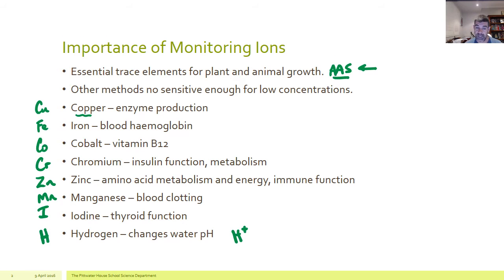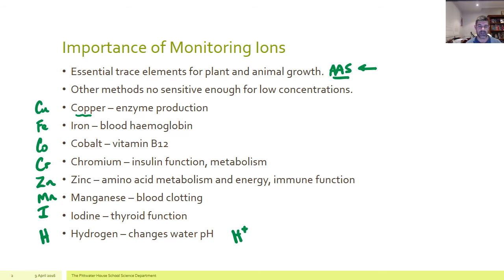pH is very important for the functioning of enzymes in living organisms. So there are lots of different ions we can monitor in solution, and many different ways in which we can identify the concentration of those ions. When they are in very small concentrations, that's when we need precise techniques such as those AAS has given us.